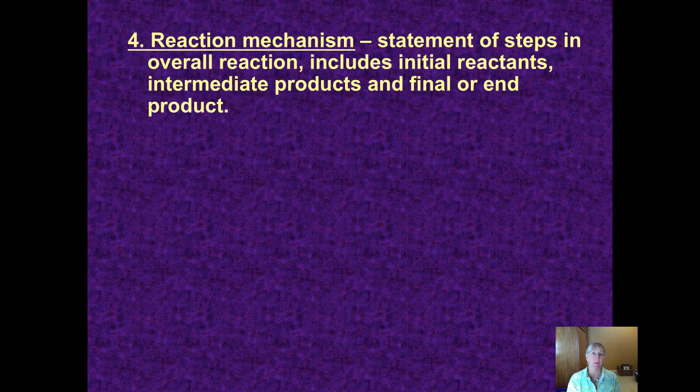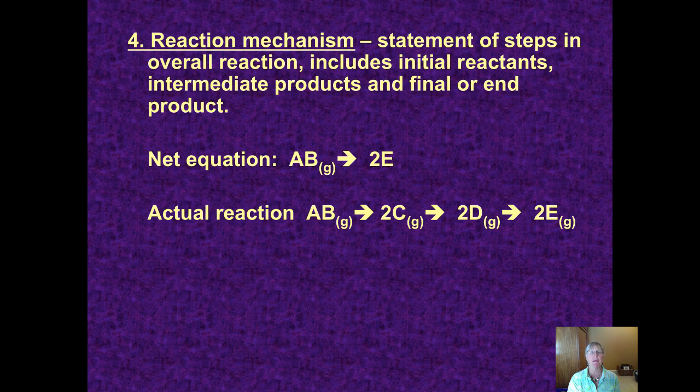All along this past year, as we've written an equation, you might have assumed that they just happen in one step. But frequently, they are quite complex. It's probably not AB turning immediately into product 2E. It might be a series of steps, where we produce an intermediate product C, which turns into an intermediate product D, and finally you get the final product 2E.